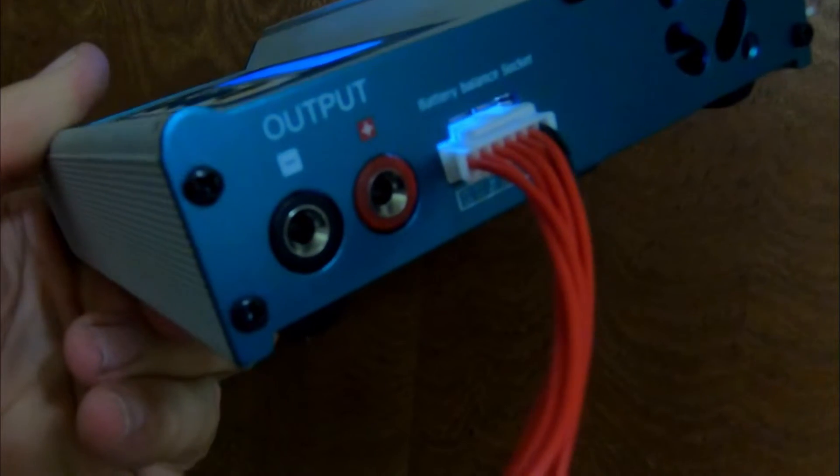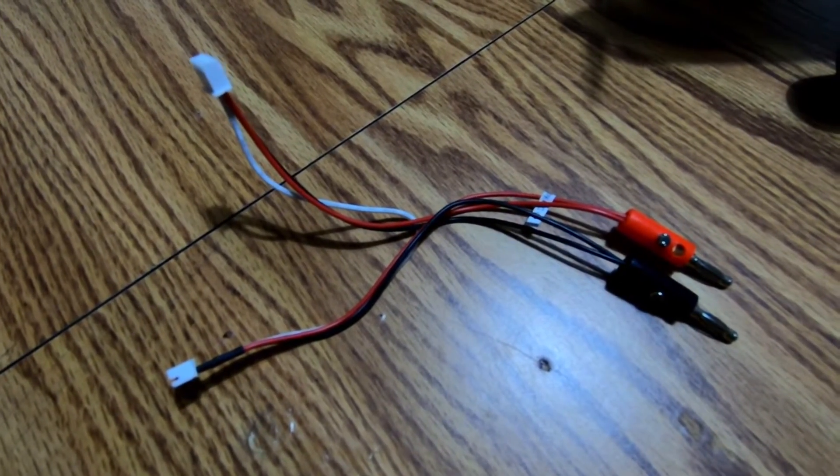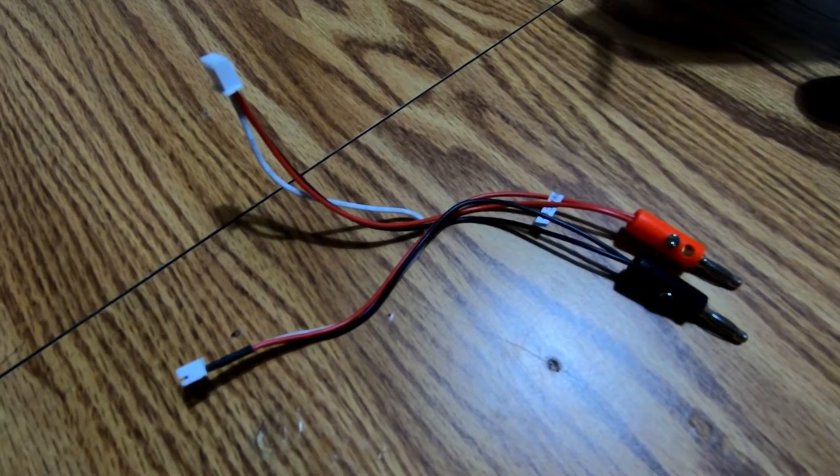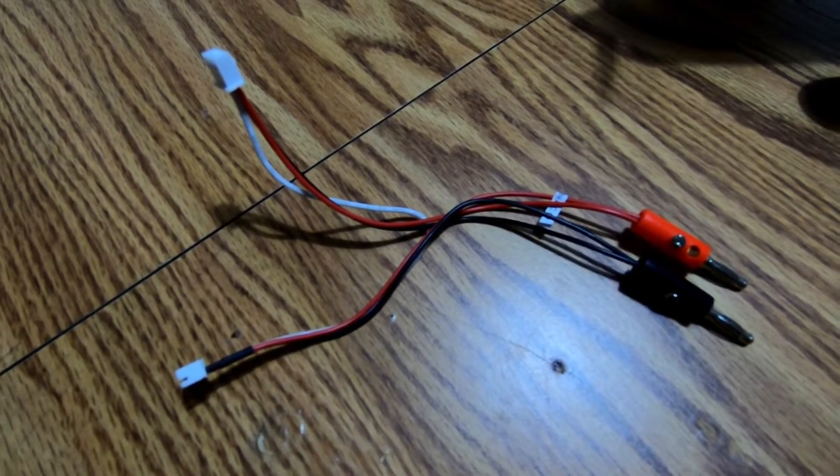And there's a red clip here for positive and a black for negative. So what you're also going to need is this little balance adapter wire that you can get from Amazon or you can buy it directly from Horizon Hobby.